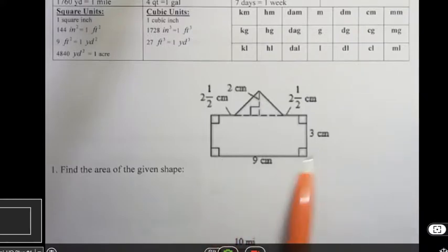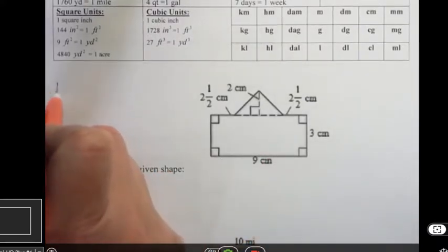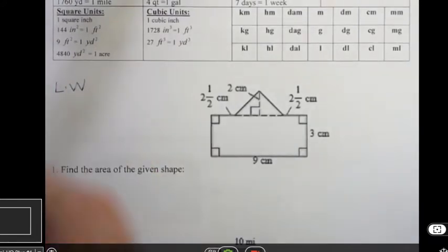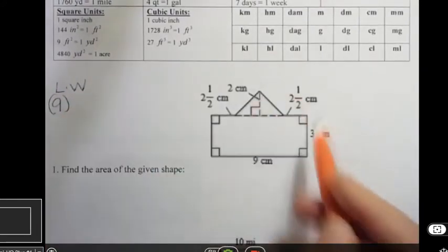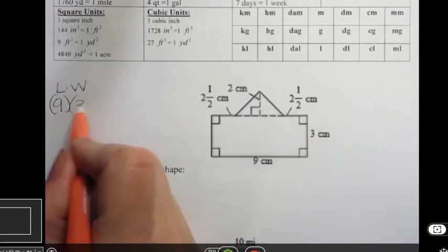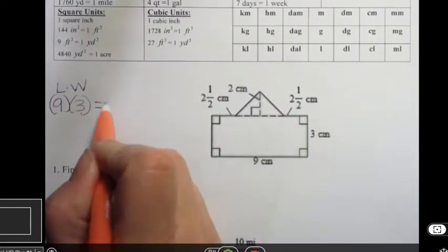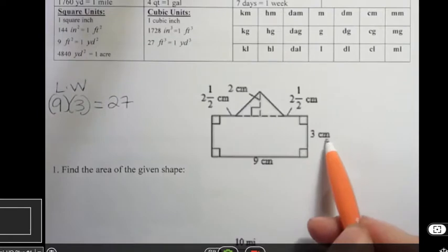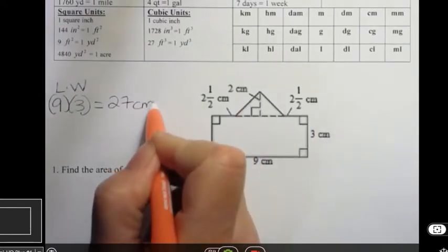So let's do the rectangle part first. For the rectangle, we have length times width, and the length of that is 9 and the width is 3. So I know for the rectangle part I have 27, and it's centimeters, so it's centimeters squared.